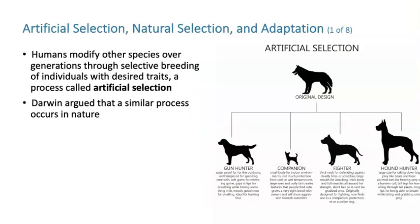Artificial selection is simply the way that humans modify and have control over organisms generation after generation through selective breeding — choosing 'I want this trait but not that trait.' Darwin argued that in his day they knew all about artificial selection, with many different types of dogs existing 150 years ago. Darwin argued there was a similar process happening in nature, where you have an original design and some modifications on that.